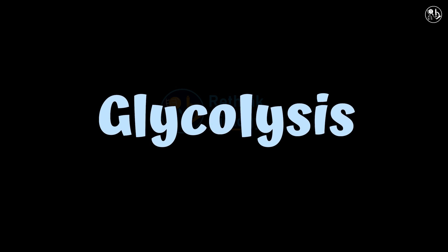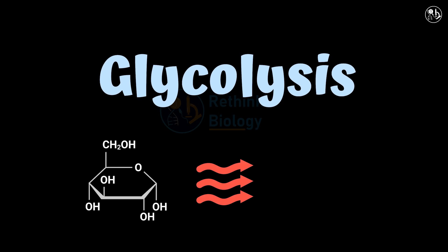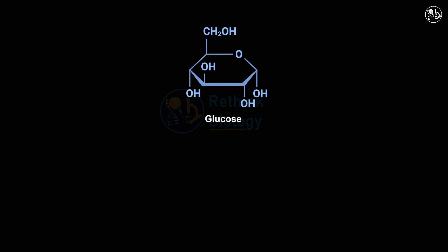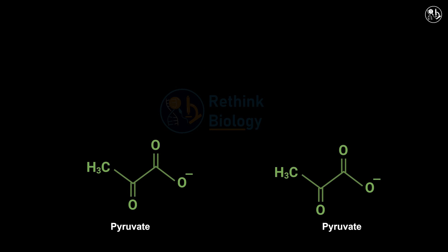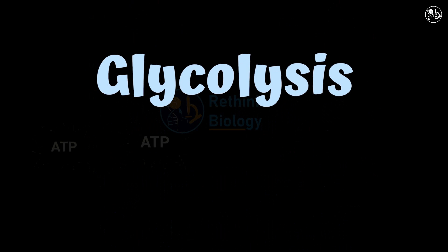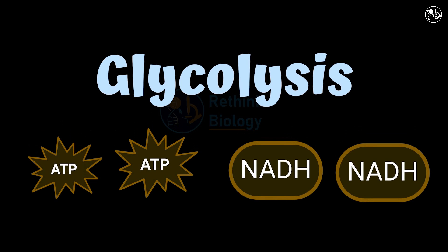Welcome to our animation video on Glycolysis, the process of breaking down glucose to produce energy. Glycolysis is a series of chemical reactions that convert glucose, a 6-carbon sugar, into two molecules of pyruvate, a 3-carbon compound. Glycolysis also produces two molecules of ATP, the energy currency of the cell, and two molecules of NADH, an electron carrier that can be used for further energy production.